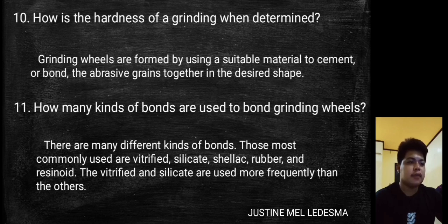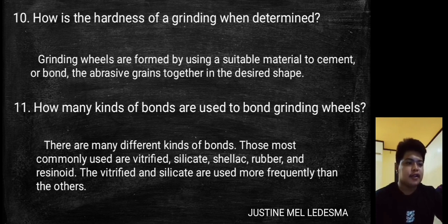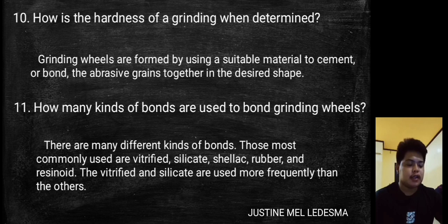How many kinds of bonds are used to bond grinding wheels? There are many different kinds of bonds. Those most commonly used are vitrified, silicate, shellac, rubber, and resinoid. The vitrified bonds are used more frequently than the others.